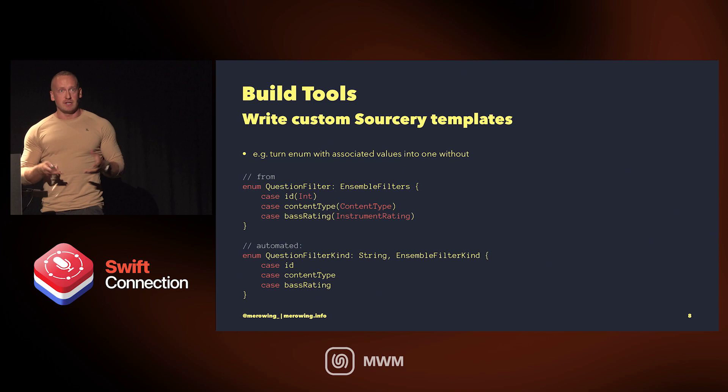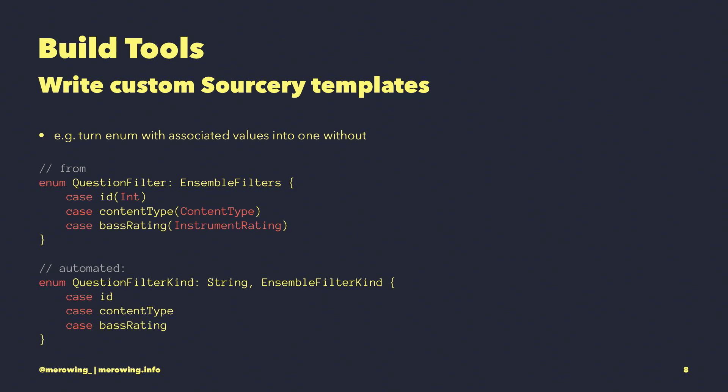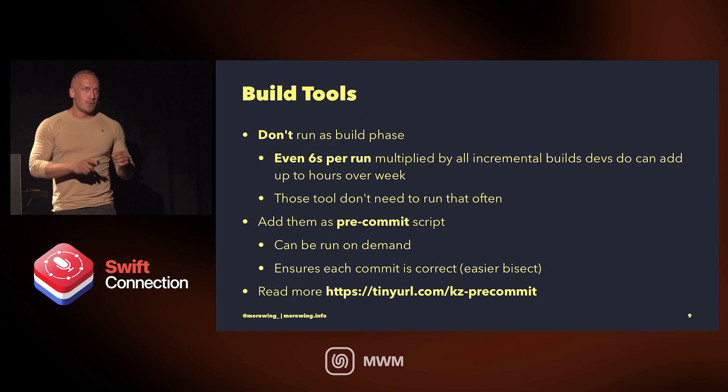Sorcery — a lot of people that use it use the bundle templates I provide, but that's not really where the power is. Write your own templates. Airbnb, for example, scans all their frameworks and finds classes conforming to a specific protocol and auto-registers them in the system — macros cannot do that, Sorcery can. When I have an enum with associated values, I can use Sorcery to generate a kind enum — a sibling of my original enum — for building custom UI. Sorcery has automatic daemon mode, and there's Sorcery Pro for an even easier workflow.